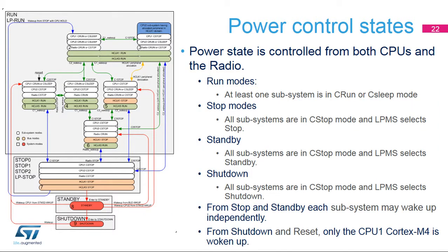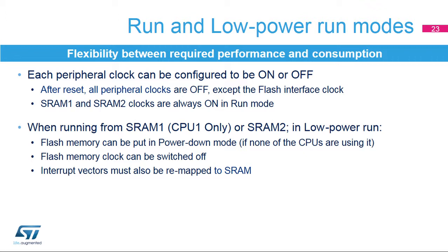This figure gives a complete overview of the power modes in relation to the CPUs and radio operating modes. Whenever a subsystem is in C-Run or C-Sleep mode, the system is in run mode. Low-power stop, standby, and shutdown modes are only entered when all three subsystems are in C-Stop mode. The low-power mode is selected by the LPMS bits; each CPU has its own LPMS bits and the system enters the highest-consuming low-power mode selected. From stop and standby modes each subsystem can be awakened independently by its own enabled wake-up sources. From shutdown mode and reset, only the CPU1 Cortex-M4 is awakened, and it is up to the Cortex-M4 software to wake up CPU2 and the radio subsystem.